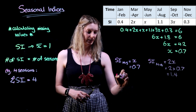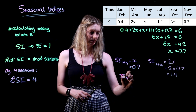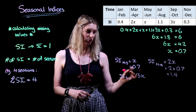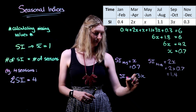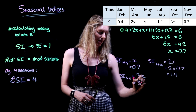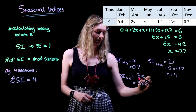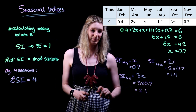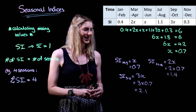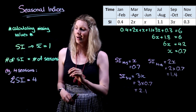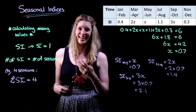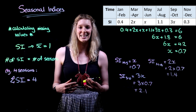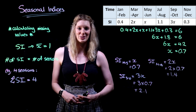Finally, we need to find the seasonal index for September to October, and we know that this is going to be 3x. Similar to what we did with March and April, we take our x value and multiply it by 3, giving a final seasonal index of 2.1. And that is how we can use our knowledge of the sum of the seasonal indices equaling the number of seasons to help us find any missing seasonal indices values within our time series data.